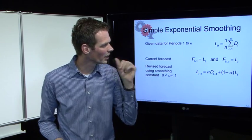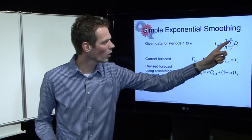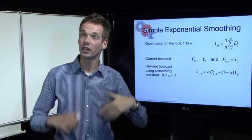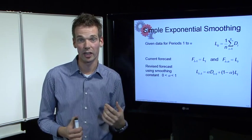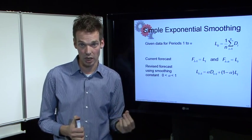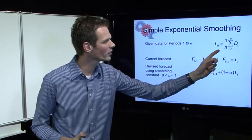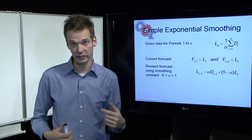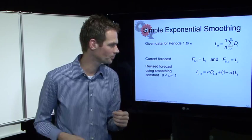We calculate L0 by taking 1 divided by n — the amount of historical data samples we have — and applying that across all the data in our data collection.